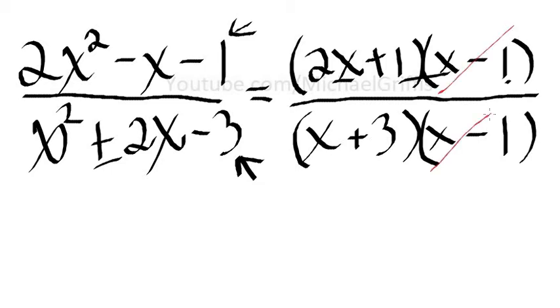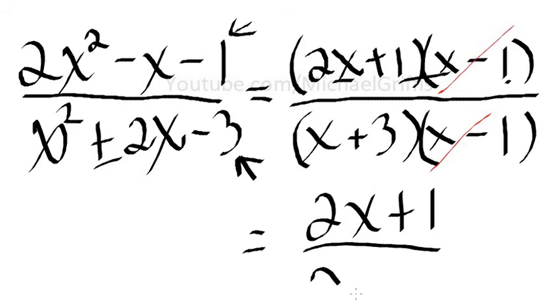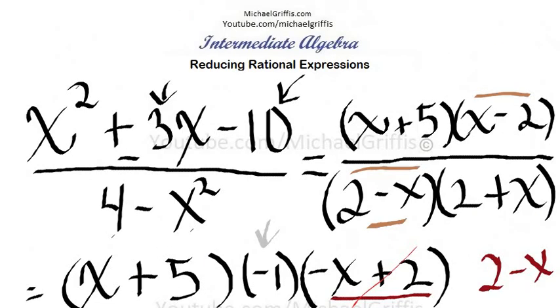We've got an x minus 1 in the numerator and x minus 1 in the denominator, so those cancel out. We're left with 2x plus 1 over x plus 3. 2x plus 1 over x plus 3, easy enough. All right, so you should have been able to get that one at this point on your own.